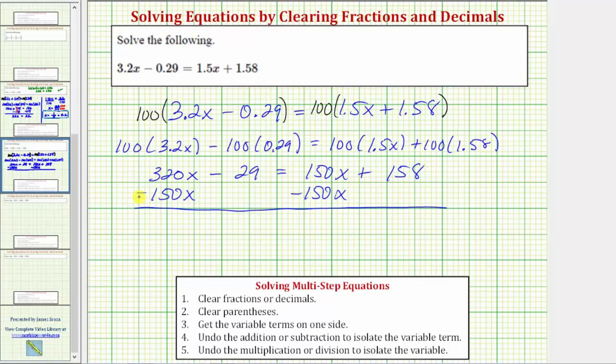320x minus 150x is 170x. We still have minus 29 equals, on the right, 150x minus 150x is 0, and therefore the right side is just 158. Notice now we have a basic two-step equation. Let's continue on the next slide.